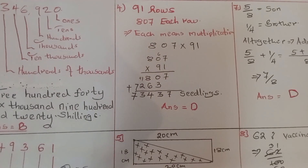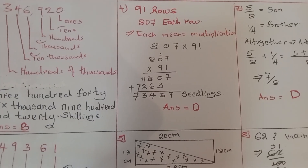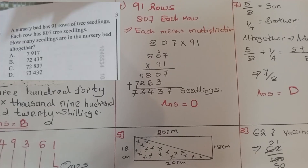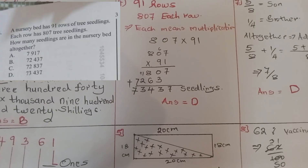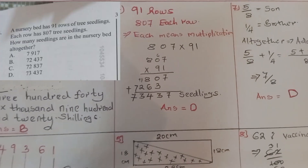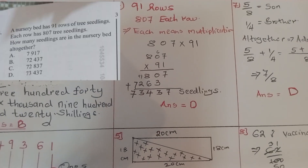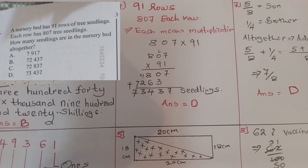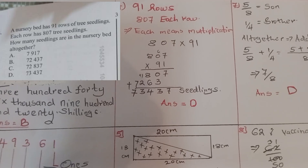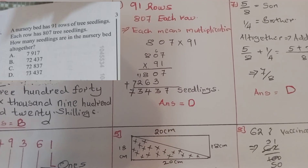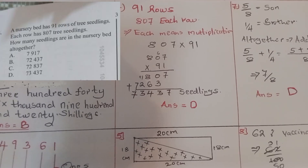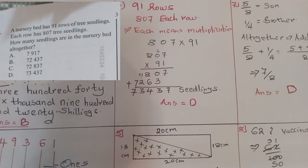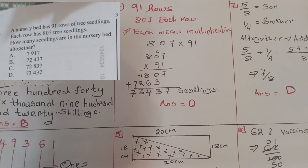Question four: a nursery bed has 91 rows of seedlings, each row has 807 seedlings. How many seedlings are in the nursery bed altogether? 'All together' means multiplication, so we take 91 rows multiplied by 807 per row. When you multiply, you come up with 73,437 seedlings. The correct answer was D.